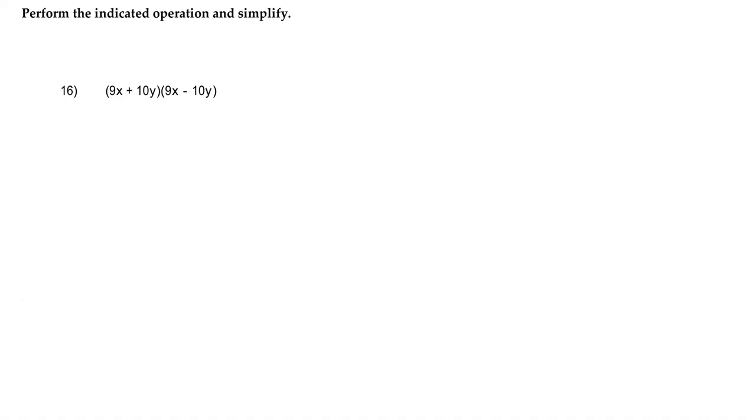The indicated operation is to multiply, because that's what it means when there's a space between two parentheses, and then we're going to simplify. So with 9x and 10y being in the first and second bubble, and these signs being opposite, this leads us to believe that these are conjugates.